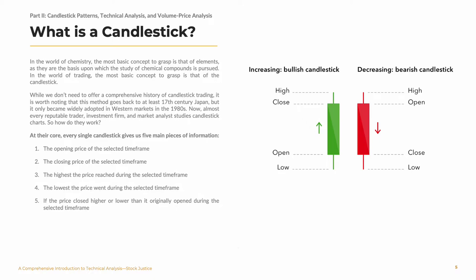So how do they work? At their core, every single candlestick gives us five main pieces of information: one, the opening price of the selected timeframe; two, the closing price of the selected timeframe; three, the highest that the price reached during the selected timeframe; four, the lowest that the price reached during that time; and five, if the price closed higher or lower than it originally opened during that period of time.